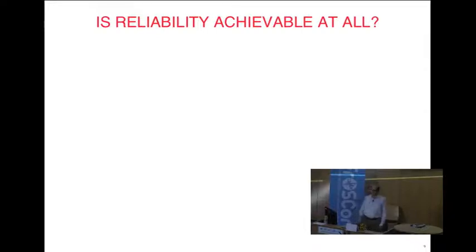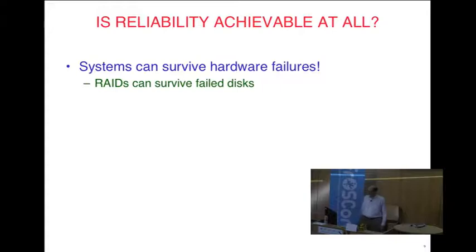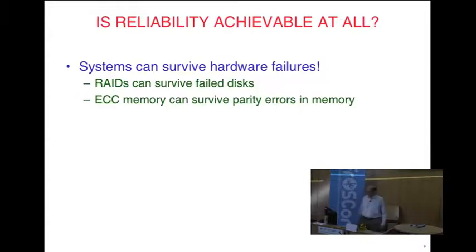The first question is, is reliability achievable at all? Systems can actually survive hardware failures. For example, RAIDs can survive a failed disk — the disk dies and if your RAID is properly working, the system merely continues. ECC memory can survive parity errors using a Hamming code. TCP/IP can survive lost packets because of the acknowledgement algorithm — if you send a packet and don't get an acknowledgement, you send it again.